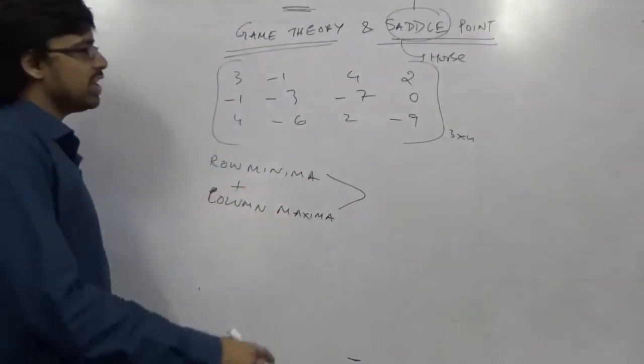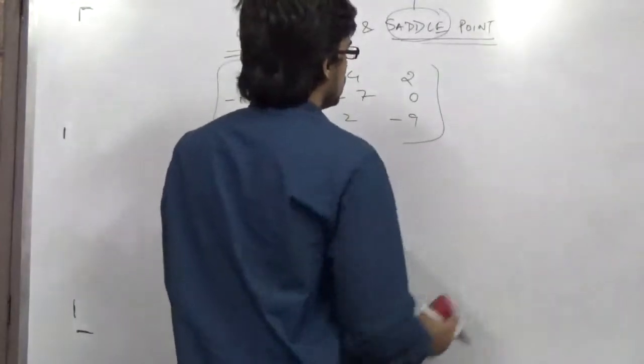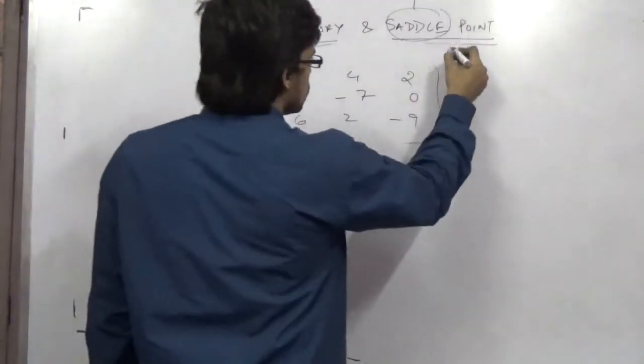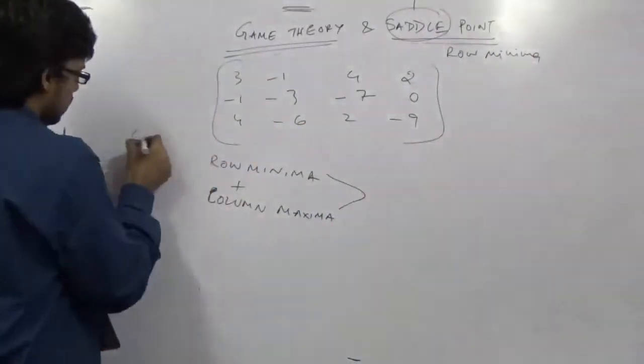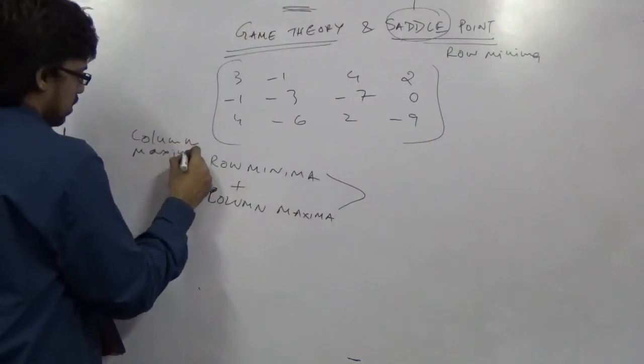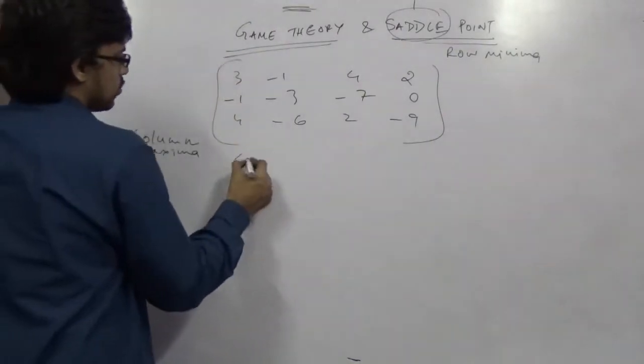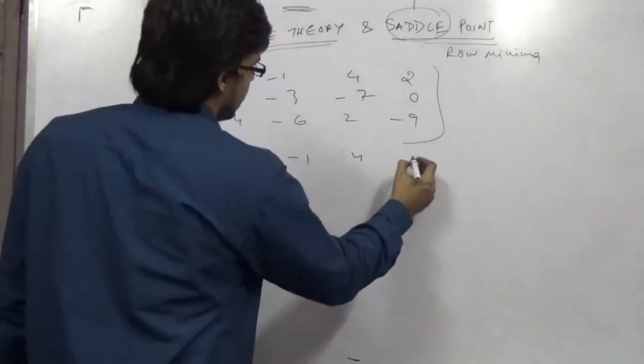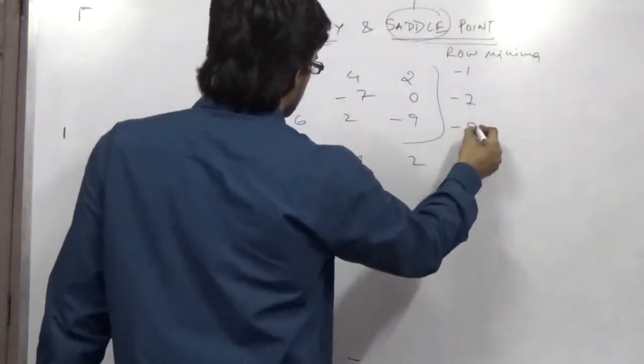What is row minima? So in each row, we have to find the minimum method. So here are the 3 rows. So these are the row minimas. And here, column maximum. So in each column is maximum. That is 4, minus 1, 4 and 2. In each row, what is the minimum? That is minus 1, minus 7 and minus 9.